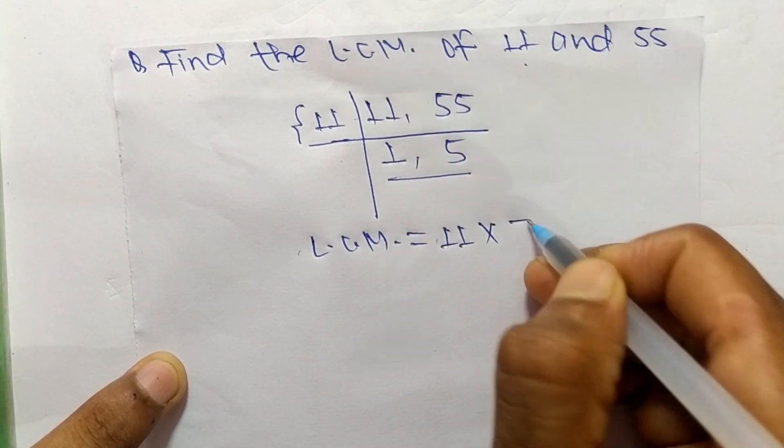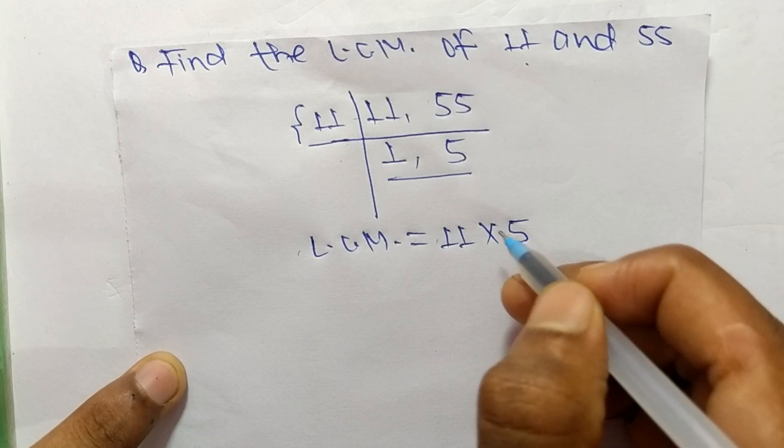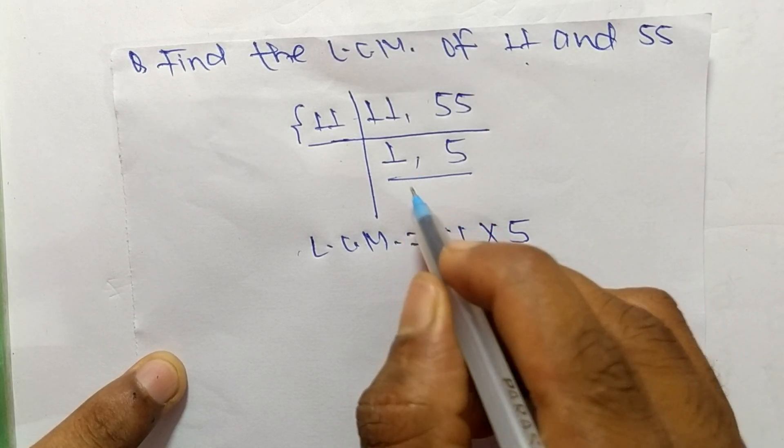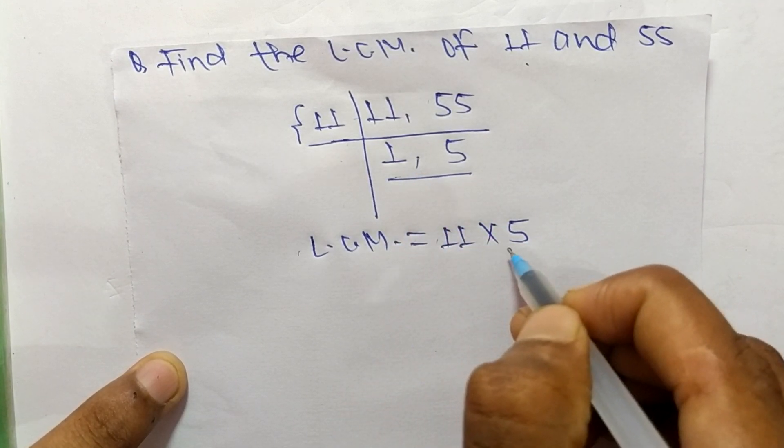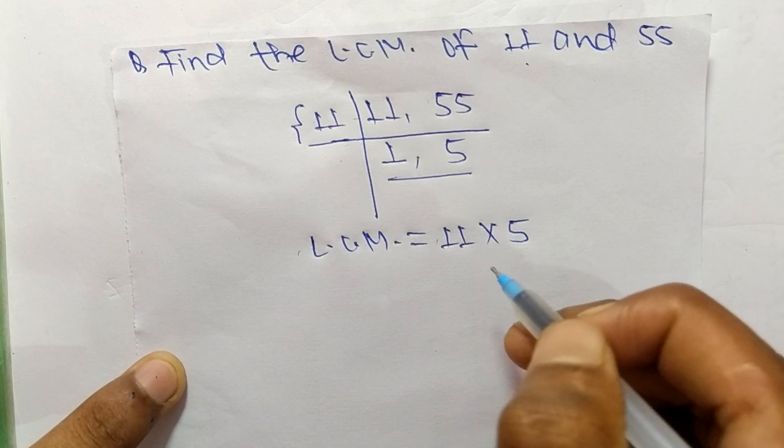5, but we take only 5 and neglect 1 because multiplying any number by 1 gives the same result.